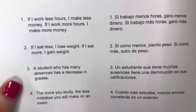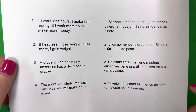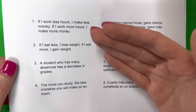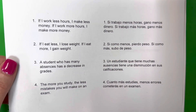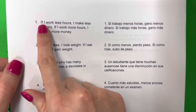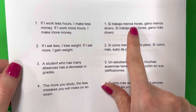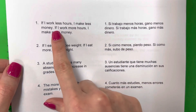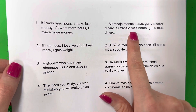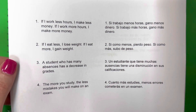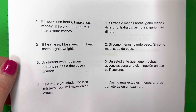Here are some real examples. Aquí están ejemplos reales, and I'm going to explain why they are examples of causation. Aquí son ejemplos de causalidad, y voy a explicar por qué son ejemplos de causalidad. Here's our first one, la primera: If I work less hours, I make less money. Si trabajo menos horas, gano menos dinero. If I work more hours, I make more money. Si trabajo más horas, gano más dinero. There's a cause and an effect. Hay una causa y efecto. If I do something, this will happen — si hago algo, algo va a pasar. There's a consequence. Hay una consecuencia.